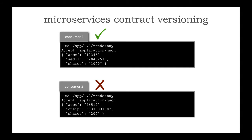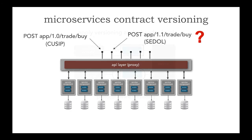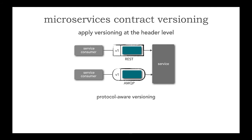The point is, this is a fairly simple problem to solve using versioning. However, it's not simple to know what to version. Do I add another endpoint to do a POST for version 1.1 trade buy which takes CDOL? Or do I change the contract with the same endpoint? My preference is to do the latter. The functionality associated with placing a trade really didn't change — all I actually changed was the contract itself, from QCIP to CDOL. So let's take a look at applying versioning at a contract level, and I'm going to do that versioning at a header level — something I like to call protocol-aware versioning.